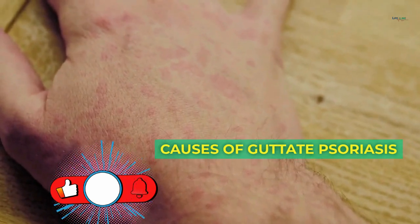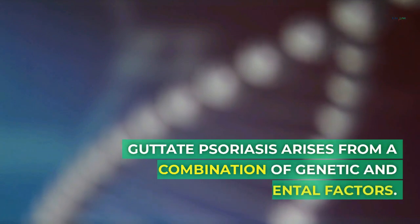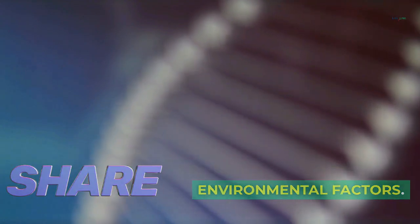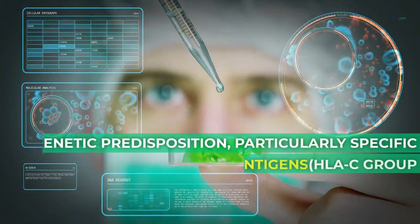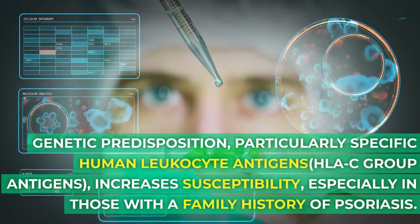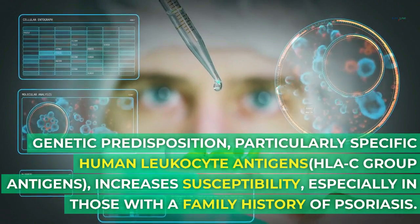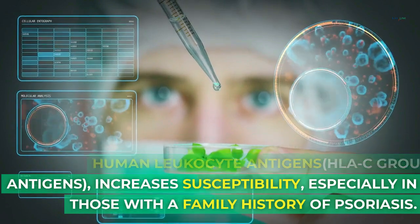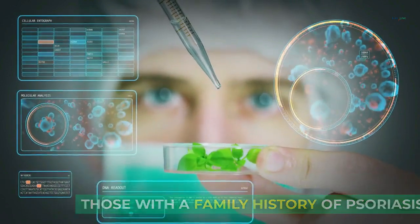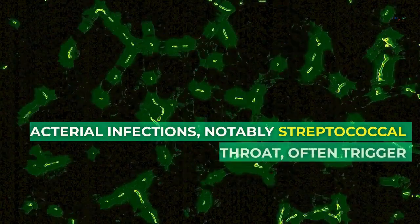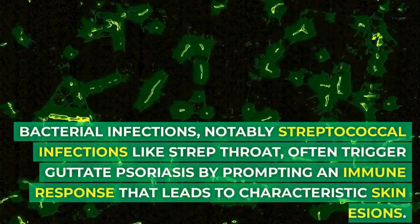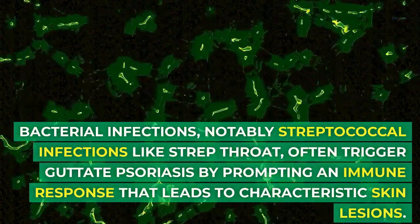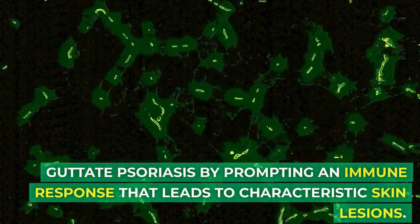Causes of guttate psoriasis: guttate psoriasis arises from a combination of genetic and environmental factors. Genetic predisposition, particularly specific human leukocyte antigen (HLA) group antigens, increases susceptibility, especially in those with a family history of psoriasis. Bacterial infections, notably streptococcal infections like strep throat, often trigger guttate psoriasis by promoting an immune response that leads to characteristic skin lesions.